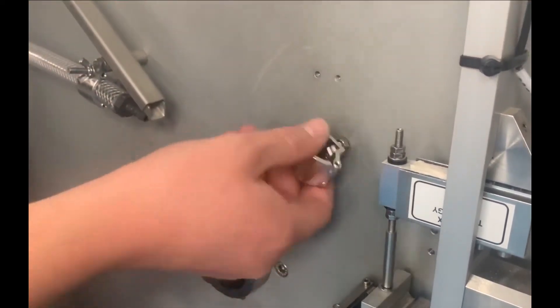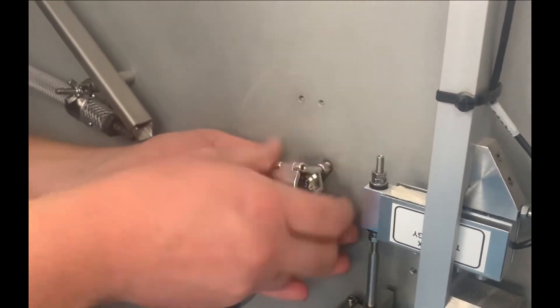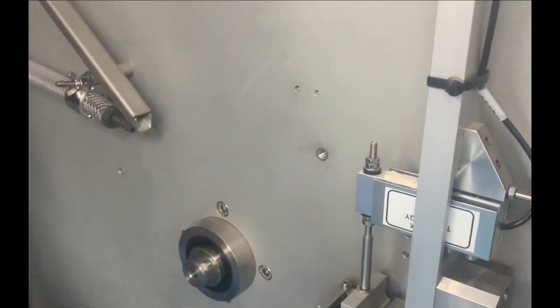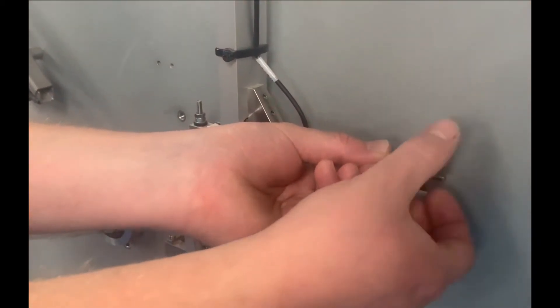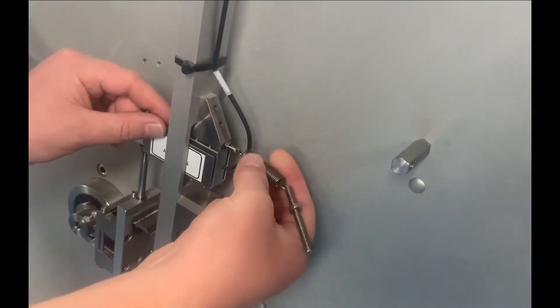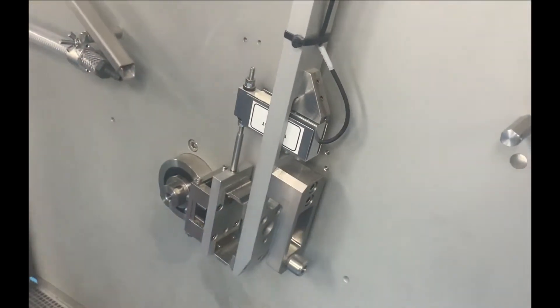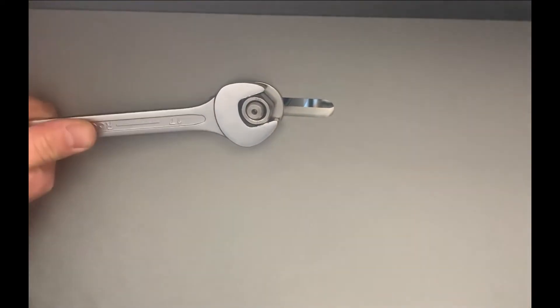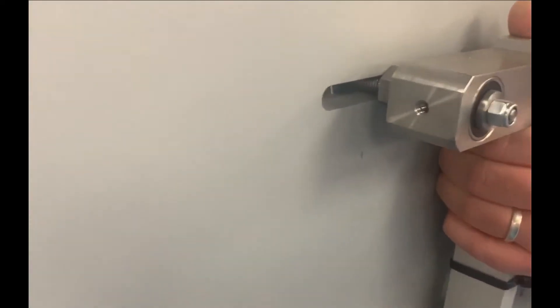Now remove the abradant nozzle clamp and the counterbalance spring. Undo the nut securing the load arm to the back plate and place the load arm on the bottom of the chamber.